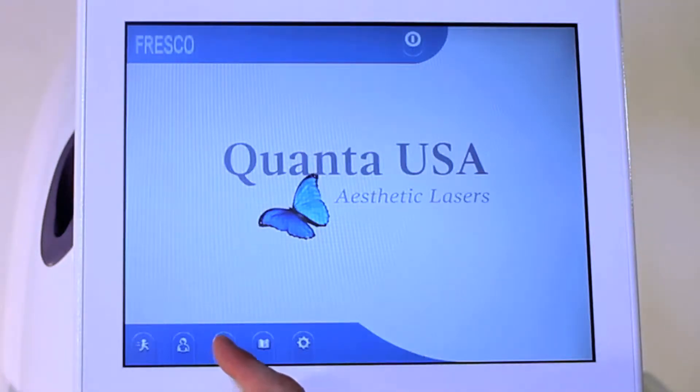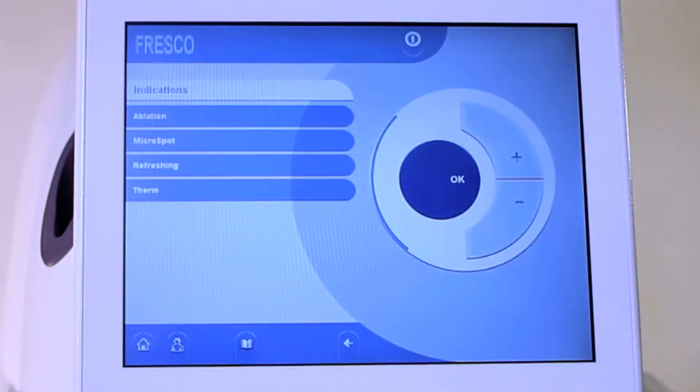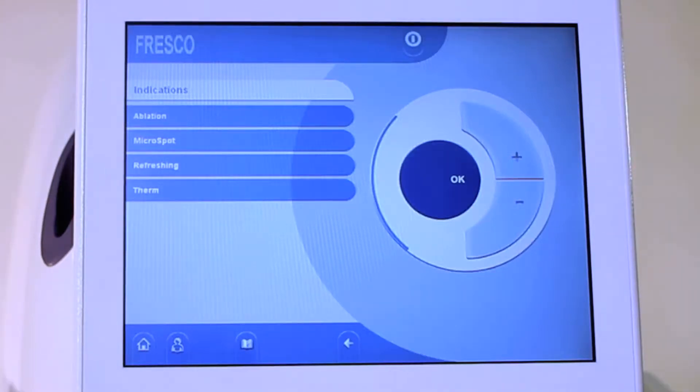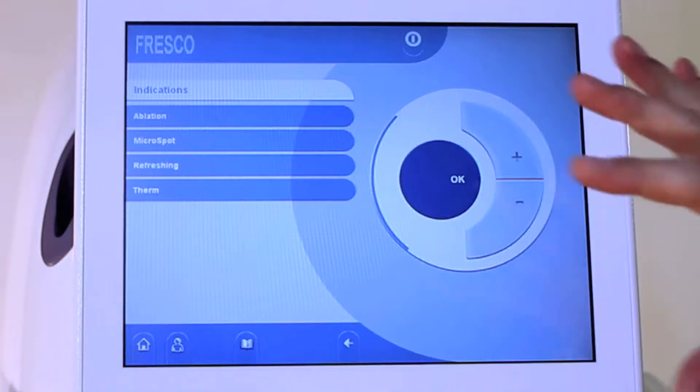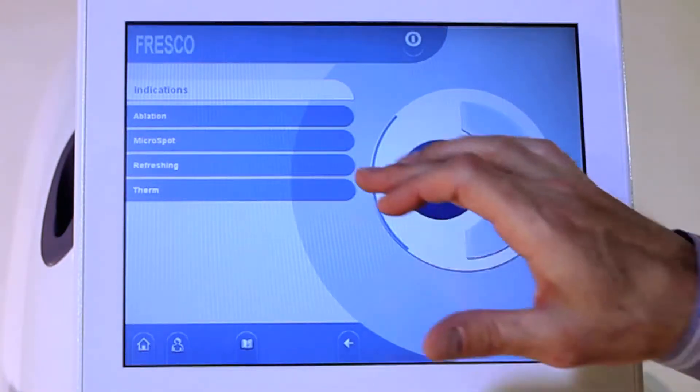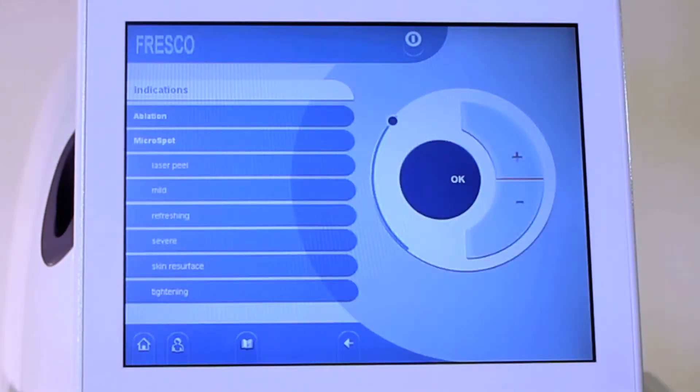When you go to the treatment screen, you hit the Rod of Asclepius and come in. Depending on which handpiece you have on, whether it's the micro spot fractional or the varia ablation or the vario ablation handpiece, it will give you different options. We happen to have the micro spot on.